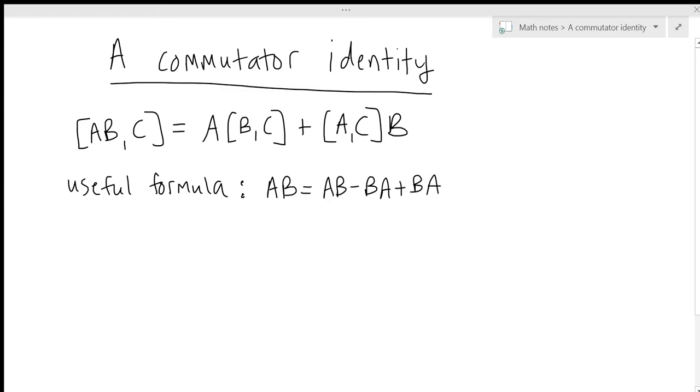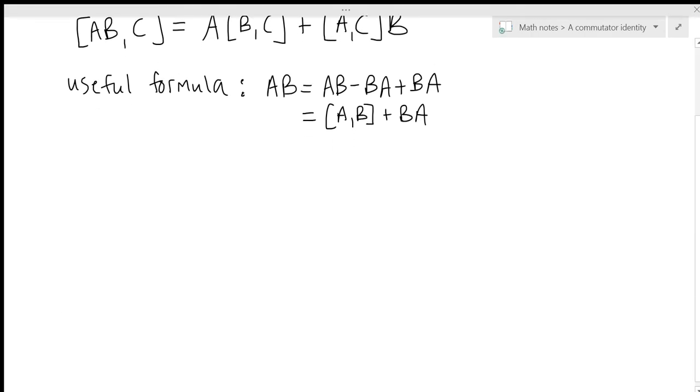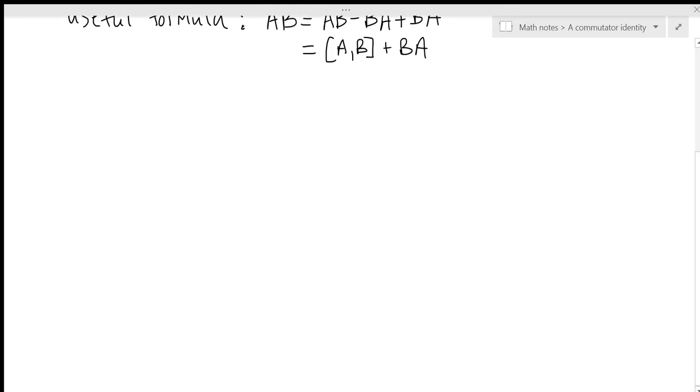So we just added and subtracted B times A and then now this is equal to the commutator [A,B] plus B times A. So that's the formula that will allow us to derive this identity. So let's see how this derivation works.